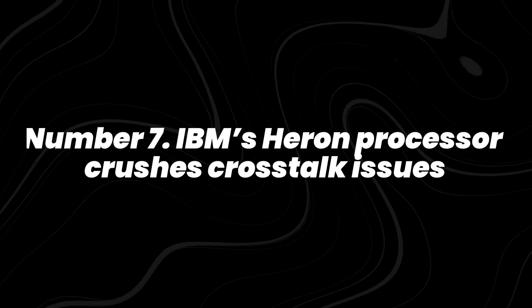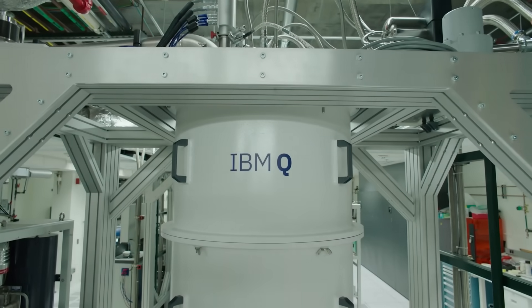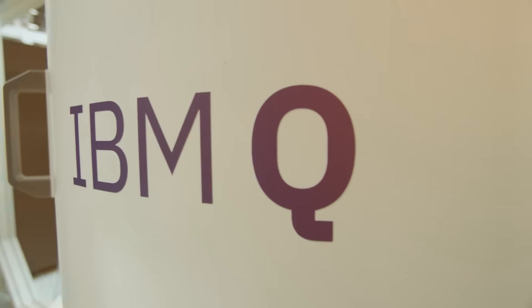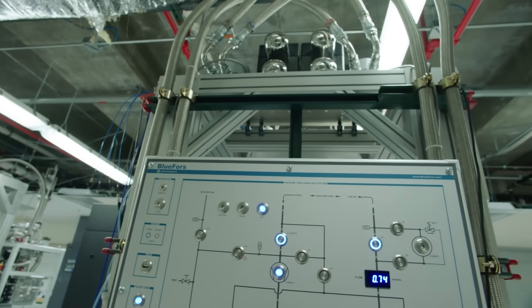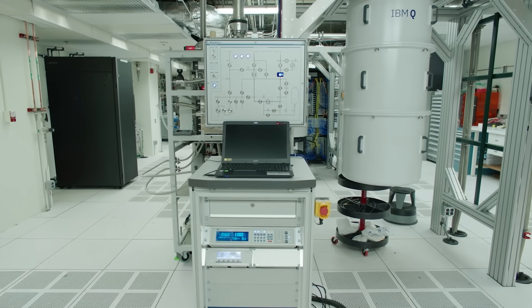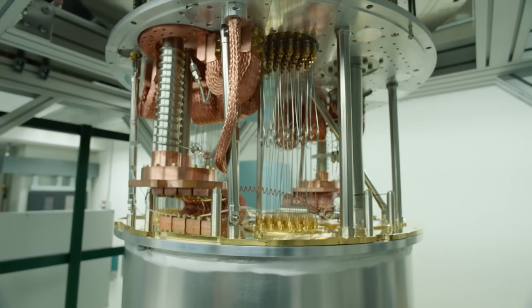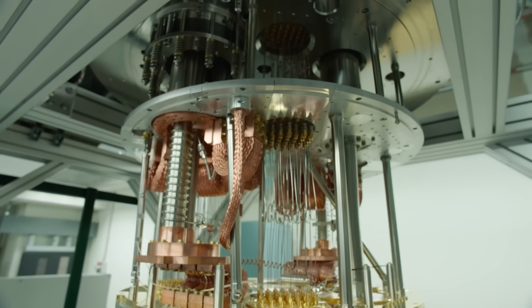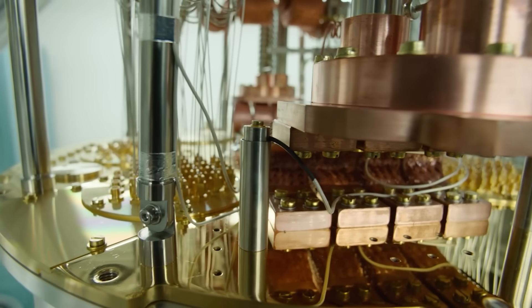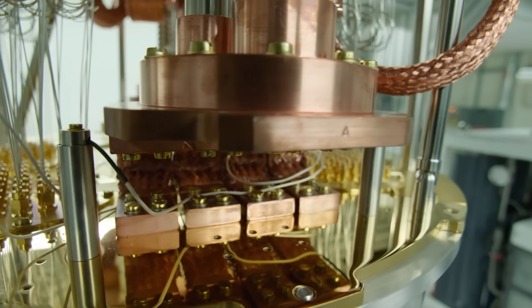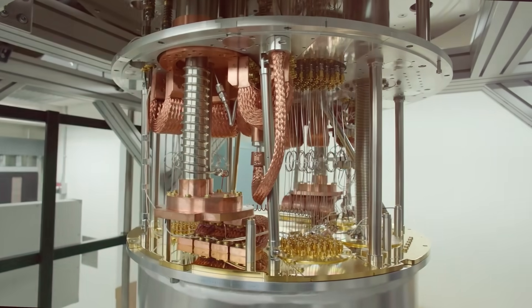Number 7. IBM's Heron processor crushes crosstalk issues. Noise is the biggest enemy of quantum hardware. Even when a chip has enough qubits, they often interfere with each other. IBM's Heron processor was built to solve exactly that. It has 133 superconducting qubits, and the key feature is something called tunable couplers. These couplers control which qubits talk to each other and when they stay quiet. Early testing showed Heron can deliver roughly three to five times better performance than IBM's previous processors because the signals are much cleaner. Less crosstalk means fewer errors during complex algorithms.